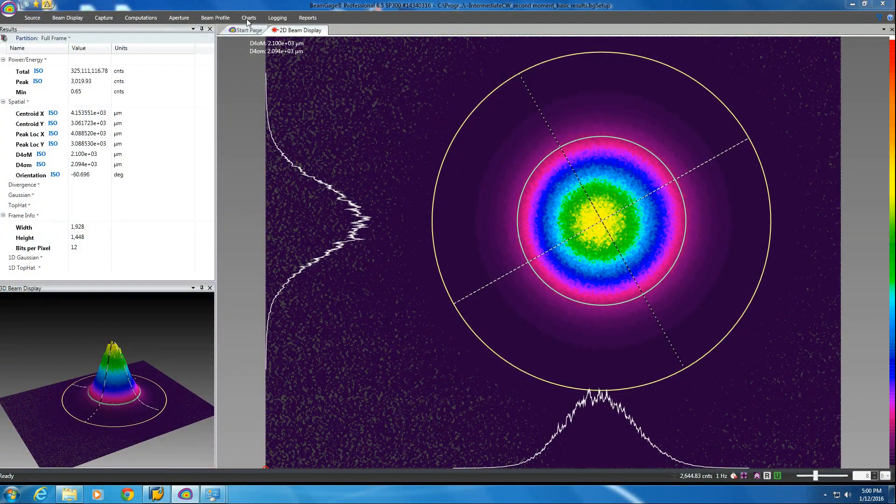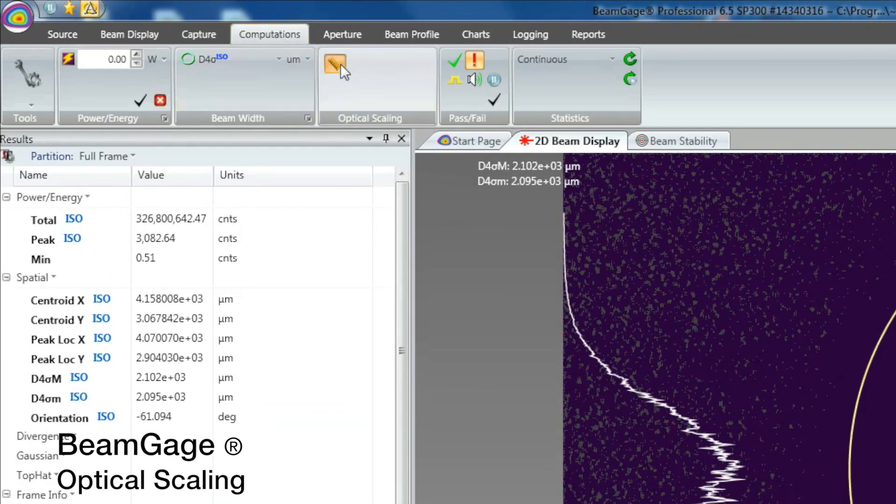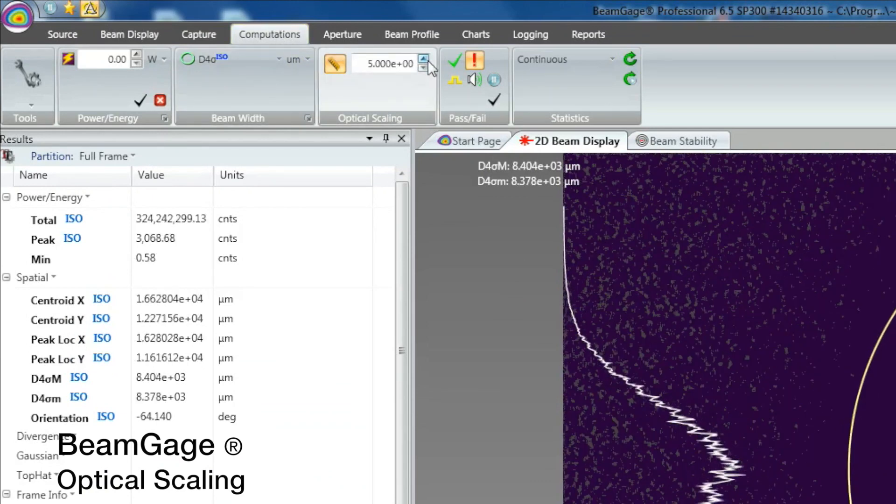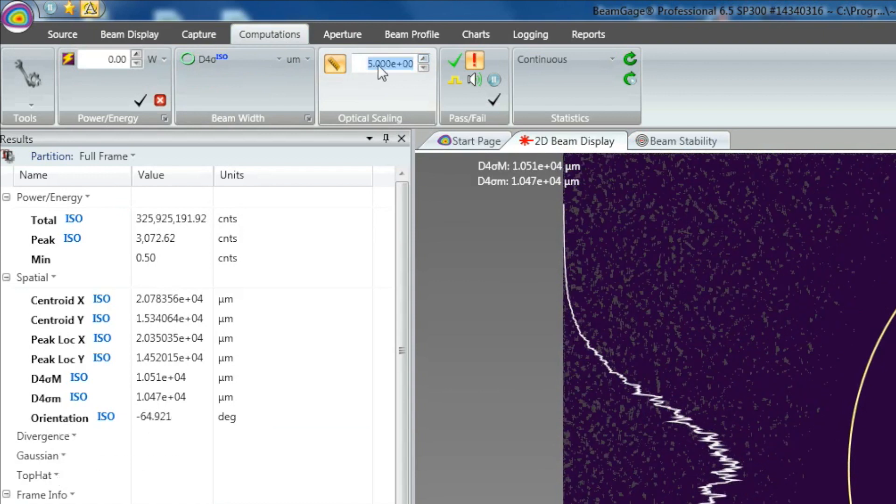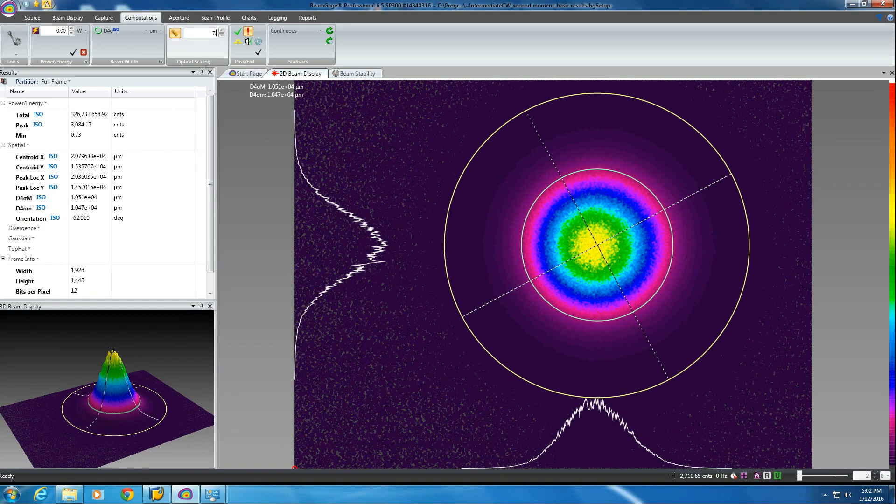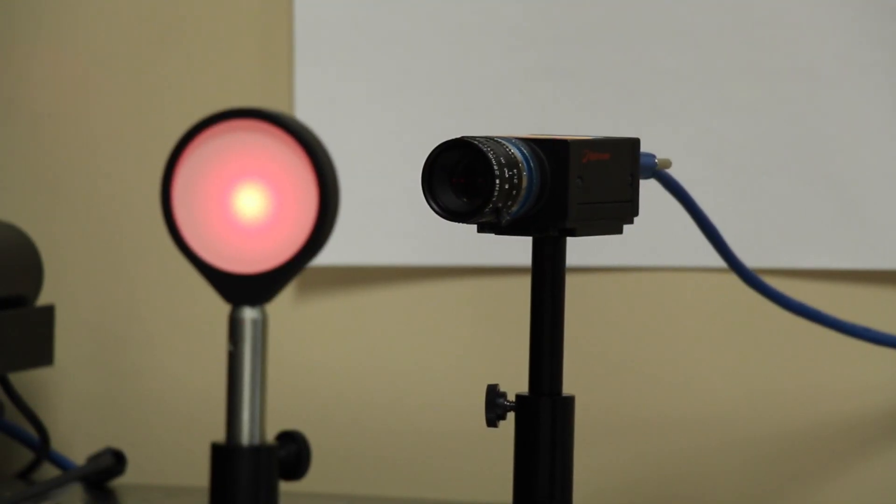The beam gauge optical scaling feature permits the beam profiling and analysis software to account for any changes in the effective pixel pitch due to re-imaging. Optical scaling enables accurate spatial correction of laser beams that have been re-imaged for easier measurement.